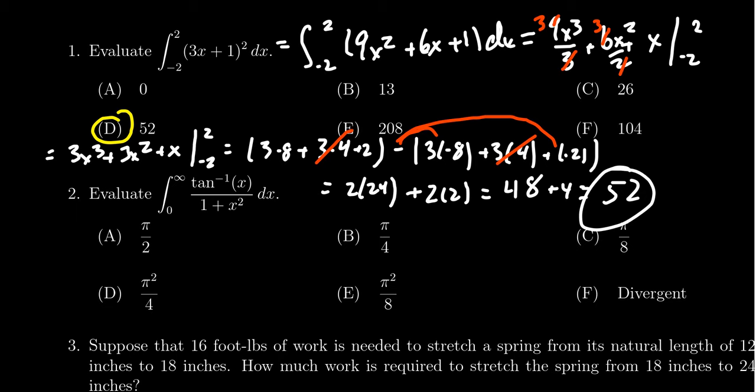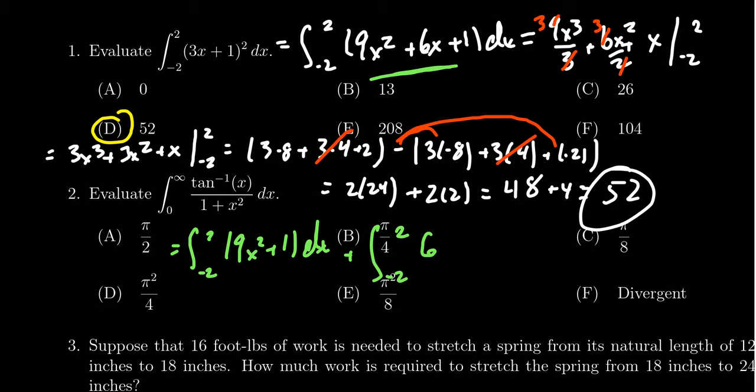If you came back to this step right here, since we were integrating it across 2 and negative 2, you could use symmetry to help you out here. You could break this thing up into the even part, which would be 9x squared plus 1 dx. And then you could do the odd part, negative 2 to 2 of the 6x dx.